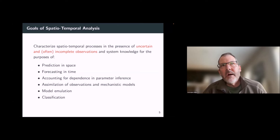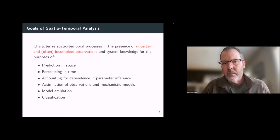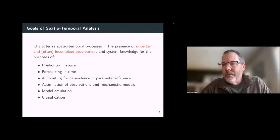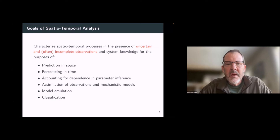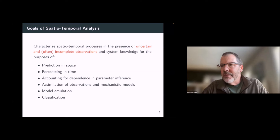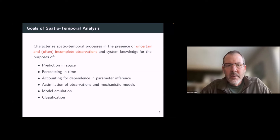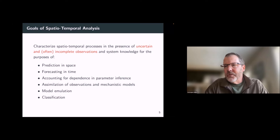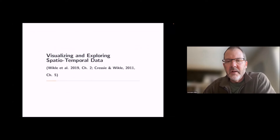When we think about space-time, we might be interested in predicting in space, forecasting in time, parameter inference while accounting for residual dependence in space and time, assimilating observations with mechanistic models, emulating a computer model more rapidly, or classification. All sorts of things — the usual stuff we're interested in.